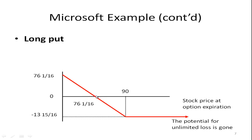You kept losing money until you got to ninety because the ninety call was not worth anything below that price. You could have gotten greater protection by choosing a call option with a lower exercise price, maybe eighty-five, but the problem is it would have been much more expensive. Notice that this payoff picture looks like you bought a put option, even though you never did buy a put option. So if a put option is not available and you want to create a payoff that looks like a put option, you can short the stock, buy a call option, and you'll get a payoff picture that looks like a put option. That's what we call a synthetic put.